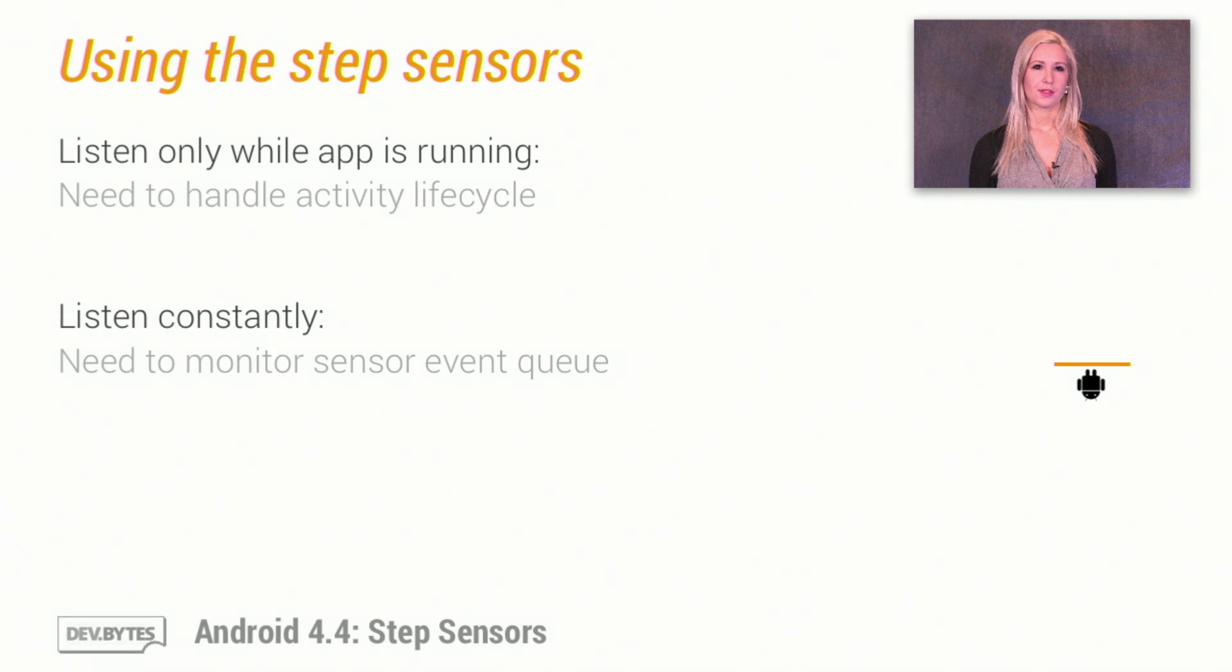The simplest way to use the step sensors is to listen for steps only while the app is running, unregistering and re-registering your listeners with the app lifecycle, and persisting the previous step count to add to the new values reported. It is also possible to use the step sensors in the background when the CPU is suspended. This requires manually flushing the sensor event queue before it overflows.